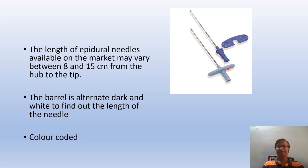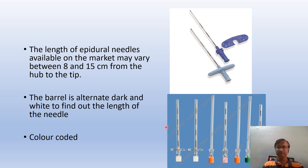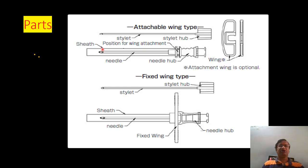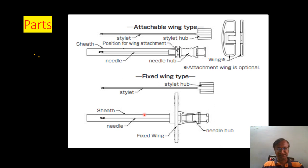It is color-coded — this is 16 gauge, this is 18 gauge. There are so many gauges available. Now here you can see: this is the Tuohy needle, inside which is the stilette and the stilette hub. There is a sheath, and with the sheath removed we have the epidural needle, which has a hub, a needle barrel, and a stilette inside. There is also a wing.